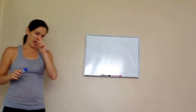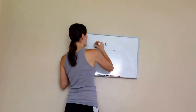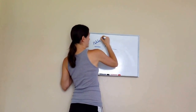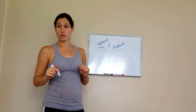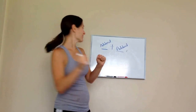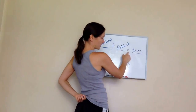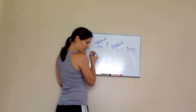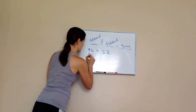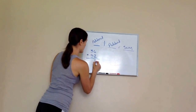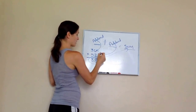Now we're going to move into adding. If we have a number plus a number, those are each called an addend. It makes sense because you're adding — addend plus addend. The answer to an adding problem is called the sum. So it's addend plus addend equals sum. For example, 36 plus 52: 6 plus 2 is 8, 5 plus 3 is 8, so the sum is 88.